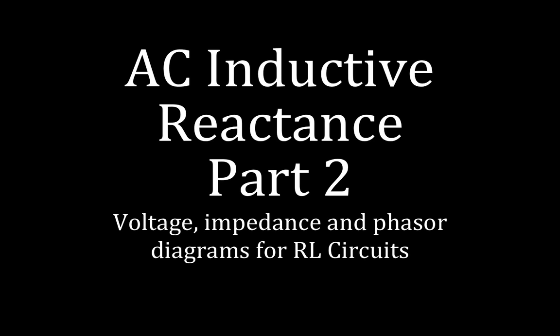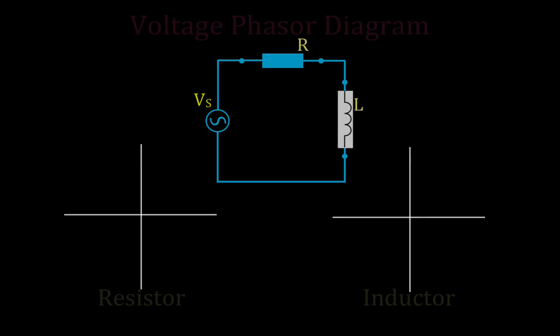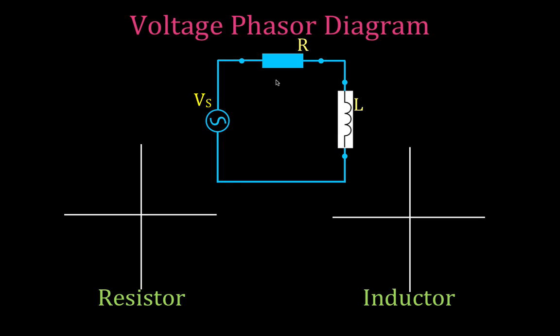Today's video is entitled AC Inductive Reactance, Part 2, and we're going to go over, conceptually, voltage, impedance, and phasor diagrams for RL circuits. In the next video, I will go over some worked examples, but this is the basic circuit diagram we're going to be using for this video. We have an RL circuit with a resistor R, an inductor L, and an AC voltage source.